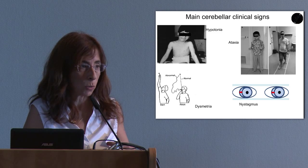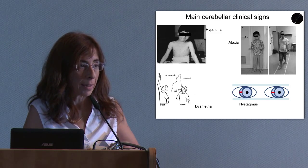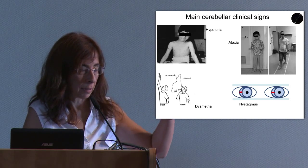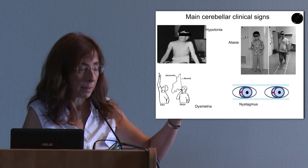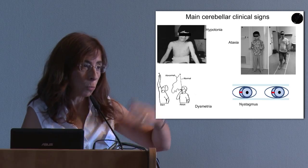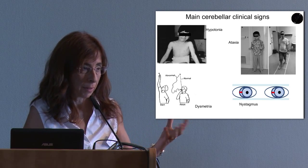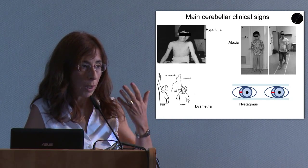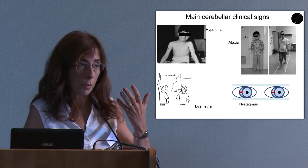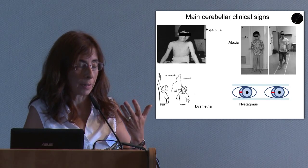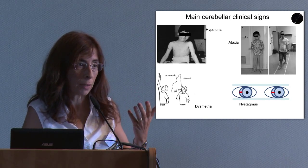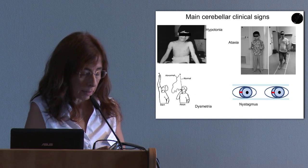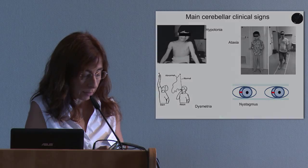Another cerebellar clinical sign is called dysmetria, meaning the difficulty for a limb to reach a target in space in a smooth way. Finally, ocular involuntary movements such as nystagmus are also very common in cerebellar disease.